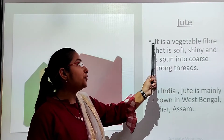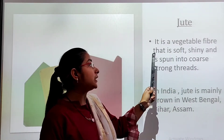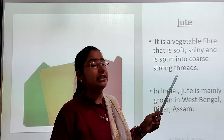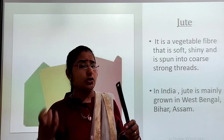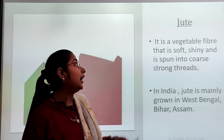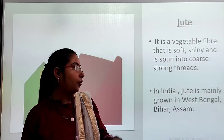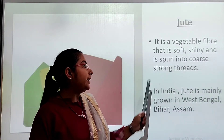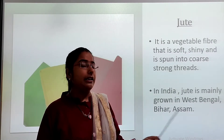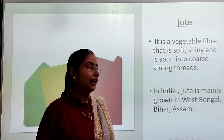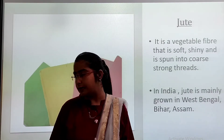Then jute. Jute is a vegetable fiber that is soft, shiny, and spun into strong threads. It is a vegetable fiber that is very soft and shiny, and the threads are strong. In India, jute is mainly grown in West Bengal, Bihar, and Assam. These are the places where jute is mainly grown.